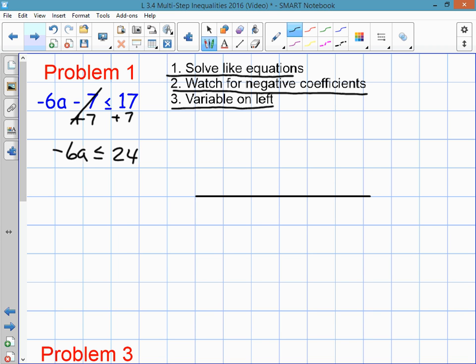To get a by itself, it's being multiplied by negative 6, so you divide by negative 6. What you do on one side, you do on the other side. And you get a. 24 divided by negative 6 is negative 4. Now we're going to watch for negative coefficients. The negative coefficient was negative 6. And when I divide by a negative, I have to flip the inequality. So I get a is greater than or equal to negative 4. The variable is on the left, so I'm good. That's my answer.